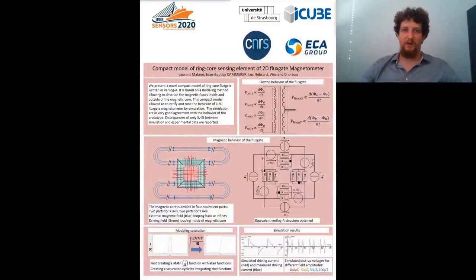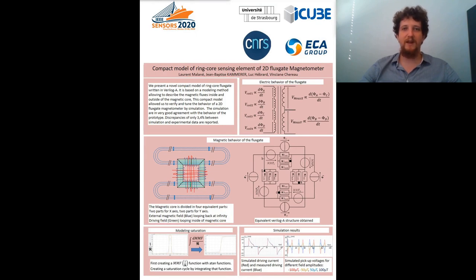Hello, my name is Laurent Malanet and I am a PhD student at the iCube laboratory in Strasbourg in France. The work I am going to present to you is a compact model of a ringcore sensing element for a 2D fluxgate magnetometer. The fluxgate is a magnetometer that is typically used when you want to reach a resolution ranging from 10 picoteslas to 10 nanoteslas, measuring static to low frequency fields up to a few kilohertz.